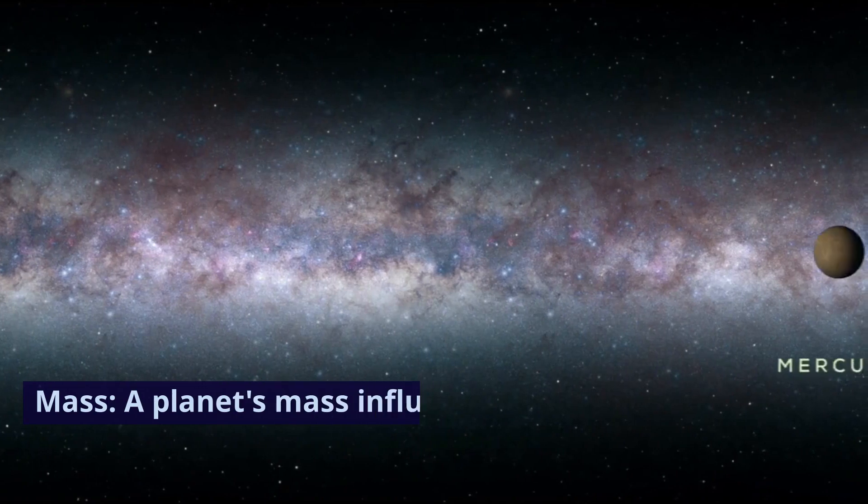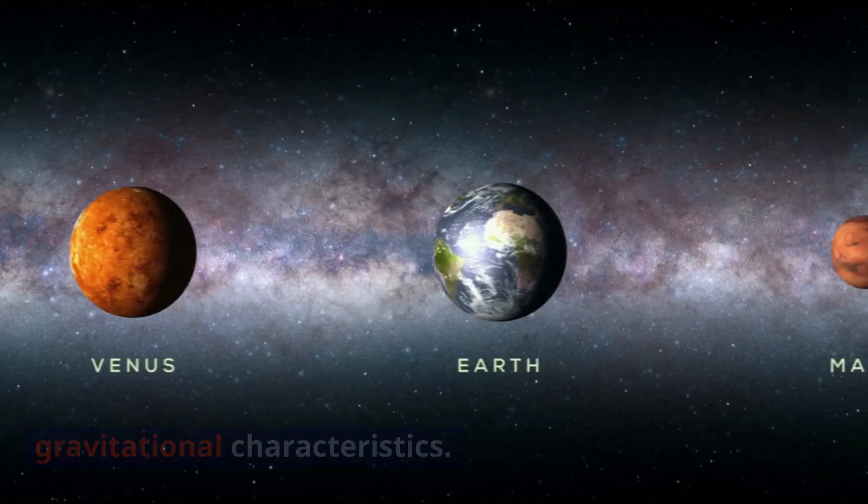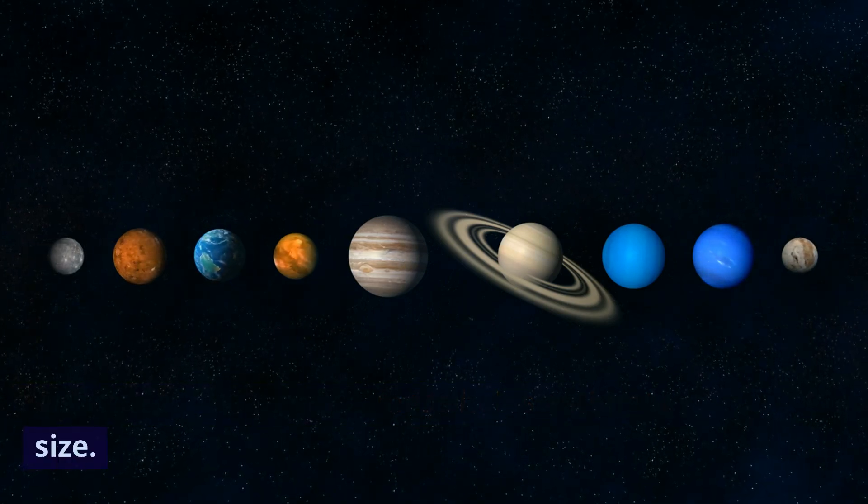Second, mass: a planet's mass influences its size and gravitational characteristics. Measuring the planet's mass helps estimate its size.